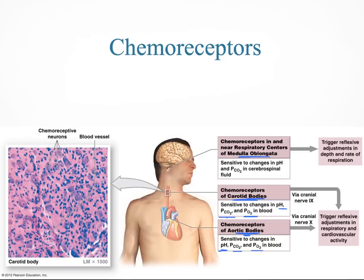Via cranial nerve 9 and cranial nerve 10, the carotid and aortic bodies trigger adjustments in both your respiratory system and cardiovascular activity. The medulla oblongata is different — it only checks pH and partial pressure of carbon dioxide, not oxygen, and only adjusts the depth and rate of respiration, having nothing to do with cardiovascular activity. That's all we need to know about general senses; next week we'll be talking about the special senses.